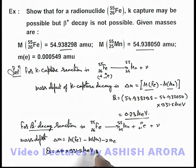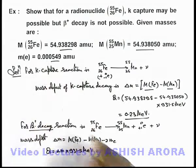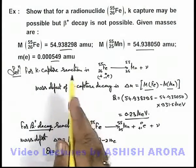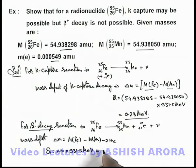When we substitute the values of mass of iron, manganese, and electron which are given, the final result is negative 0.79 million electron volts. I'm leaving the detailed calculation as an exercise due to space constraints.